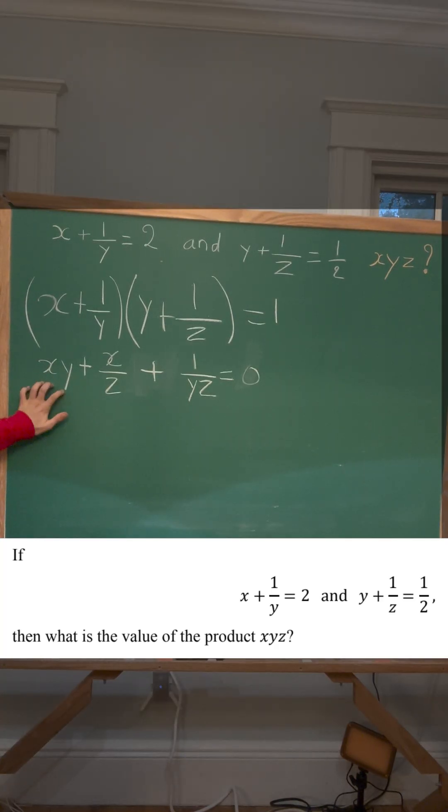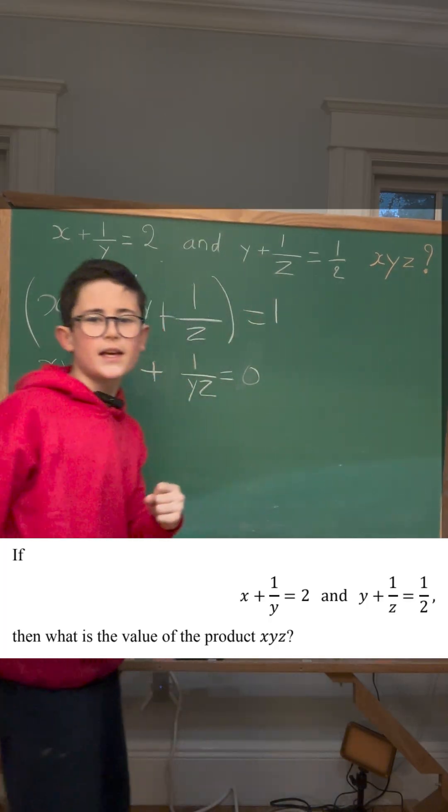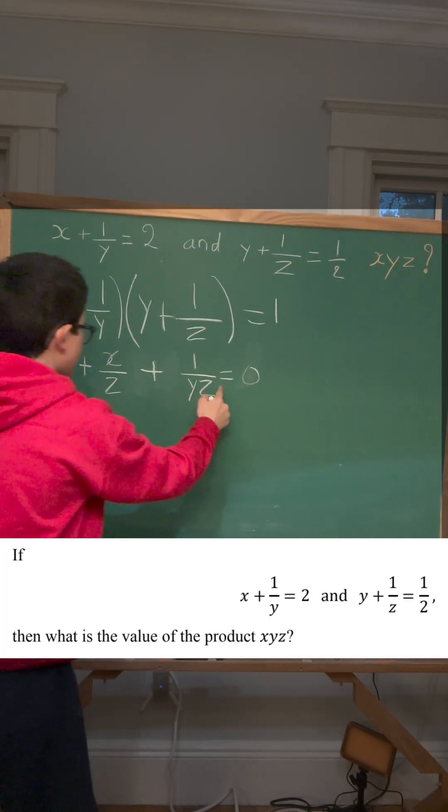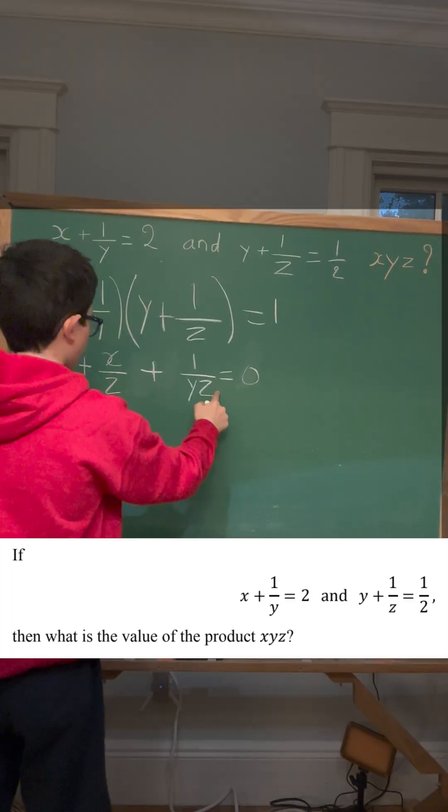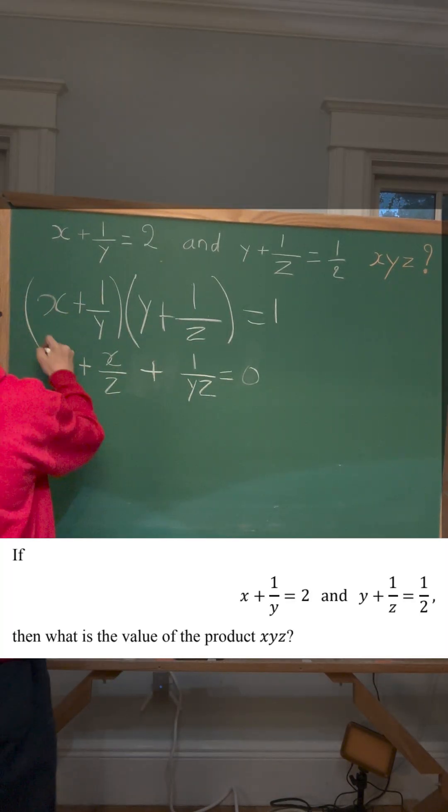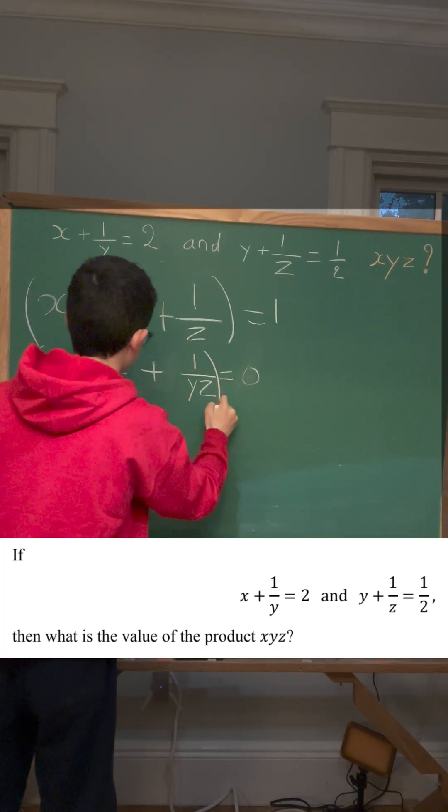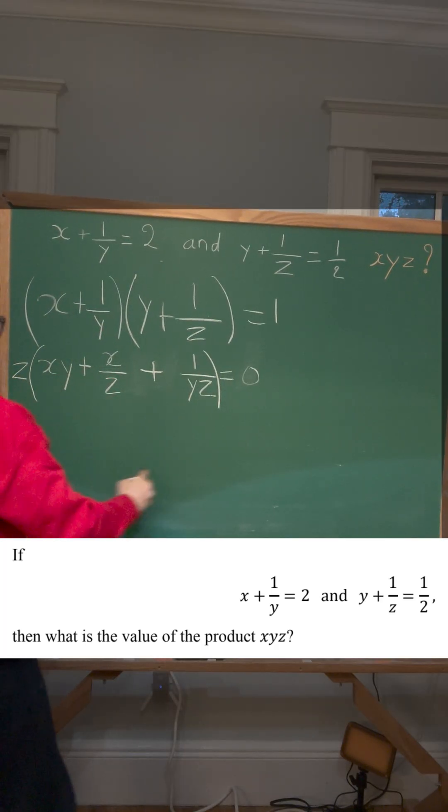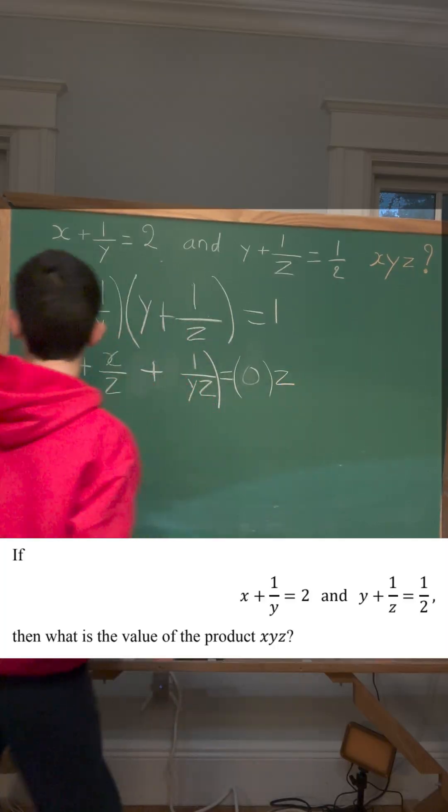We see that we have xy here, and now here we have xyz, so I'm going to multiply this side of the equation by z, and this one by z.